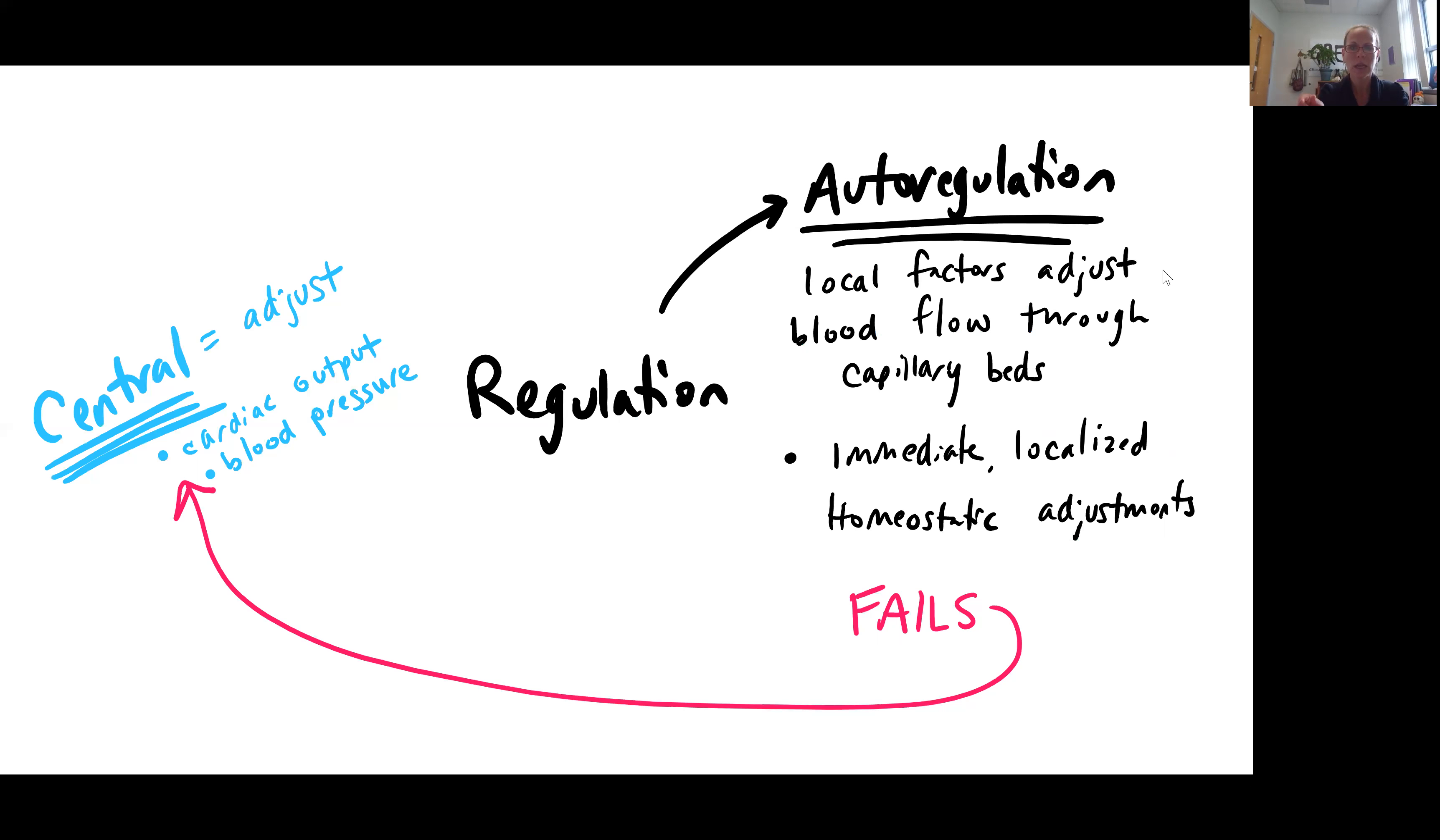If that fails, then we need our central regulation. Central regulation means, okay, now we're recruiting the nervous system and we're recruiting the endocrine system. So, once our autoregulation turns out to not be enough, then we're going to need to recreate these other two mechanisms to bring body back under control type thing. Central regulation mechanisms are going to be focusing in on factors to affect cardiac output and also blood pressure. So, we'll be looking at that.